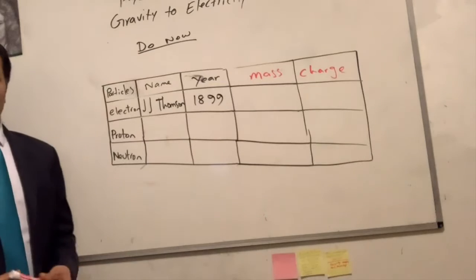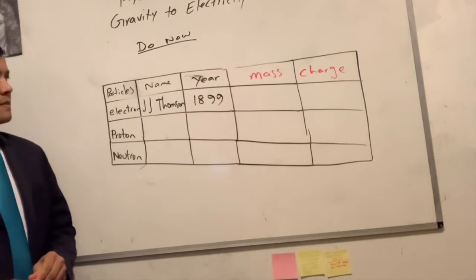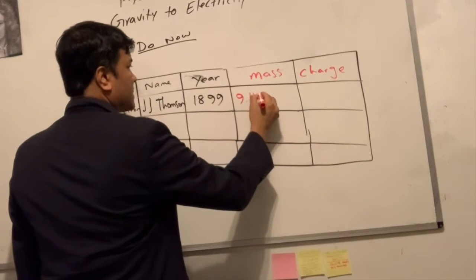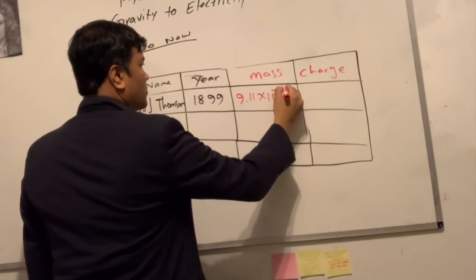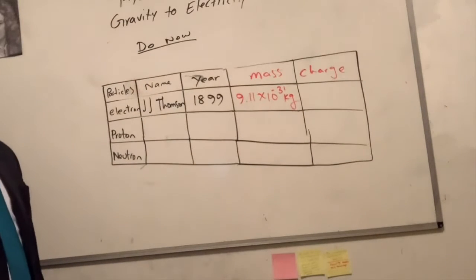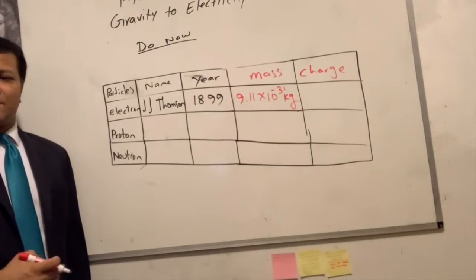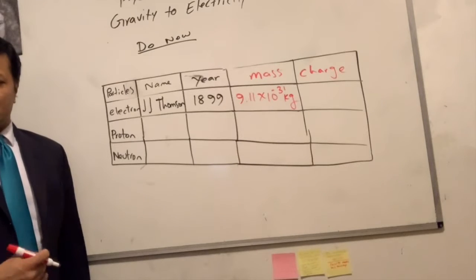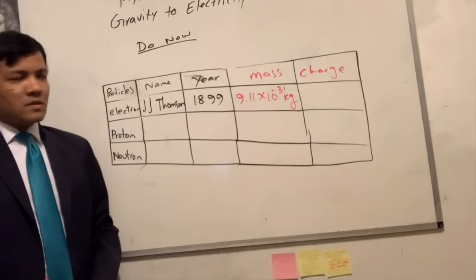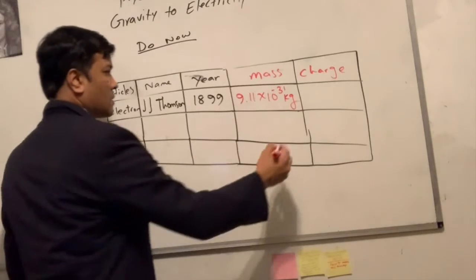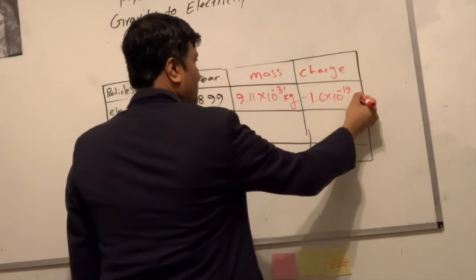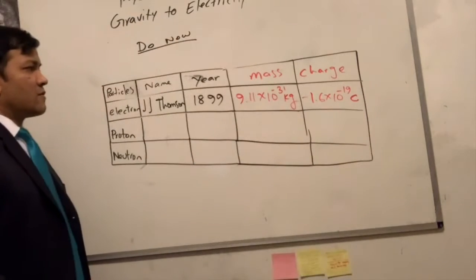The mass of the electron — that's more important than anything. 9.11 times 10 raised to negative 31. 9.11 times 10 raised to negative 31 what? Coulomb? Kilograms. And the charge? I think he mixed up the mass and charge, but people mix it up all the time. Negative 1.6 times 10 raised to 19. Negative 1. Coulomb. That's correct.